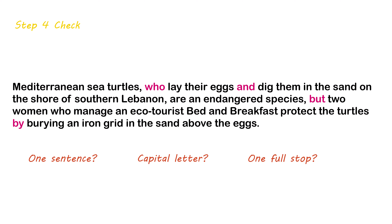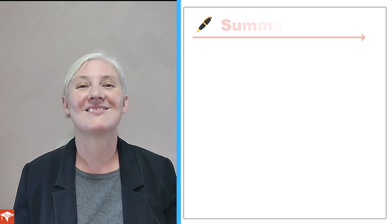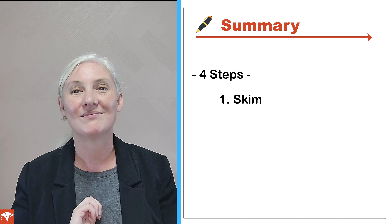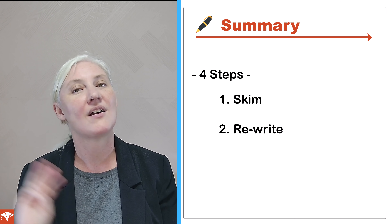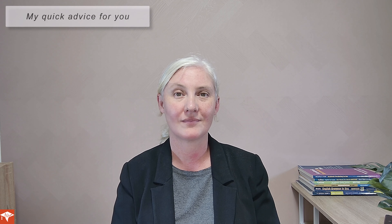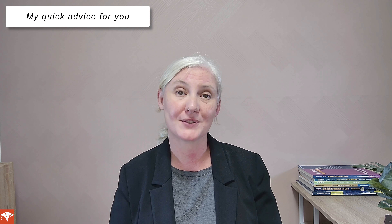Okay, so let's move on to step four: check. Is it a sentence? Yes. There is a capital letter at the beginning and only one full stop at the end. Is it between five and seventy-five words? Yes — it's forty-eight words. Is the spelling okay? Yes. So we're done. Just remember these four steps: one, skim; two, rewrite; three, combine; and four, check.